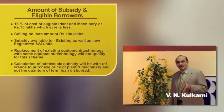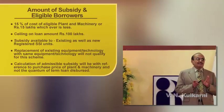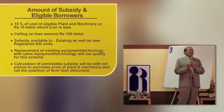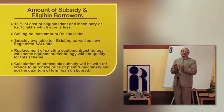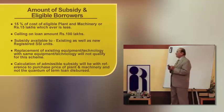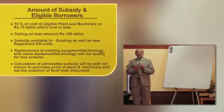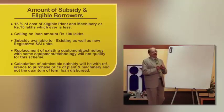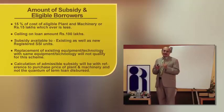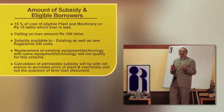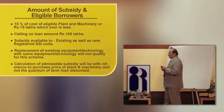What is the amount of subsidy available under the scheme? 15% of the cost of eligible plant and machinery or rupees 15 lakhs, whichever is less, is being provided by way of subsidy by the Government of India. The only condition is that the unit should not have availed a loan of more than 100 lakhs — that means about one crore of rupees — to be eligible for the subsidy.